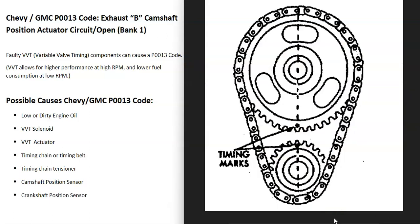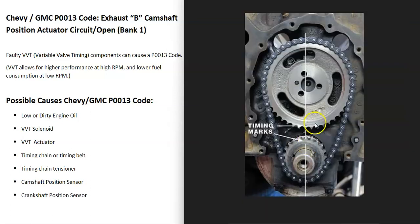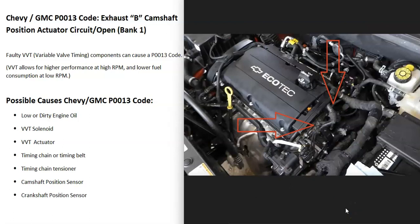If you check those things and still have an issue, it's possible something is wrong with the timing chain or timing belt — it may have slipped a notch, stretched out, or worn with age. You can check the timing marks; when you turn the engine, they should be lined up. If they're off, that can throw things off. With a really old, stretched timing chain, the marks might appear correct but the chain can still throw things off when the engine is running.